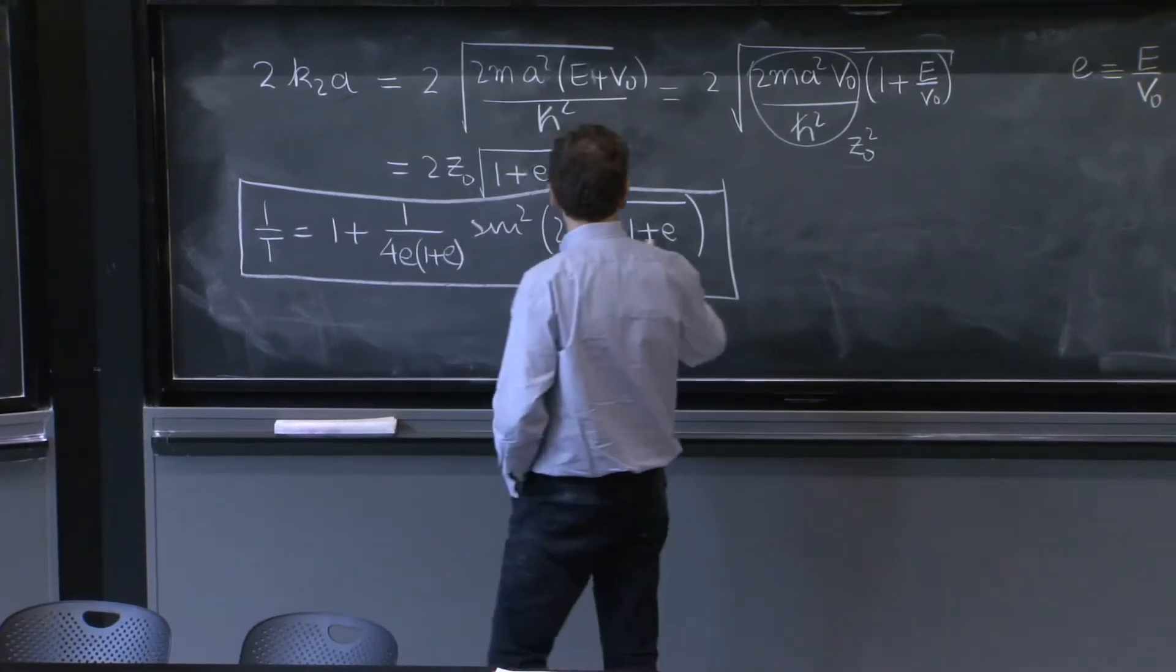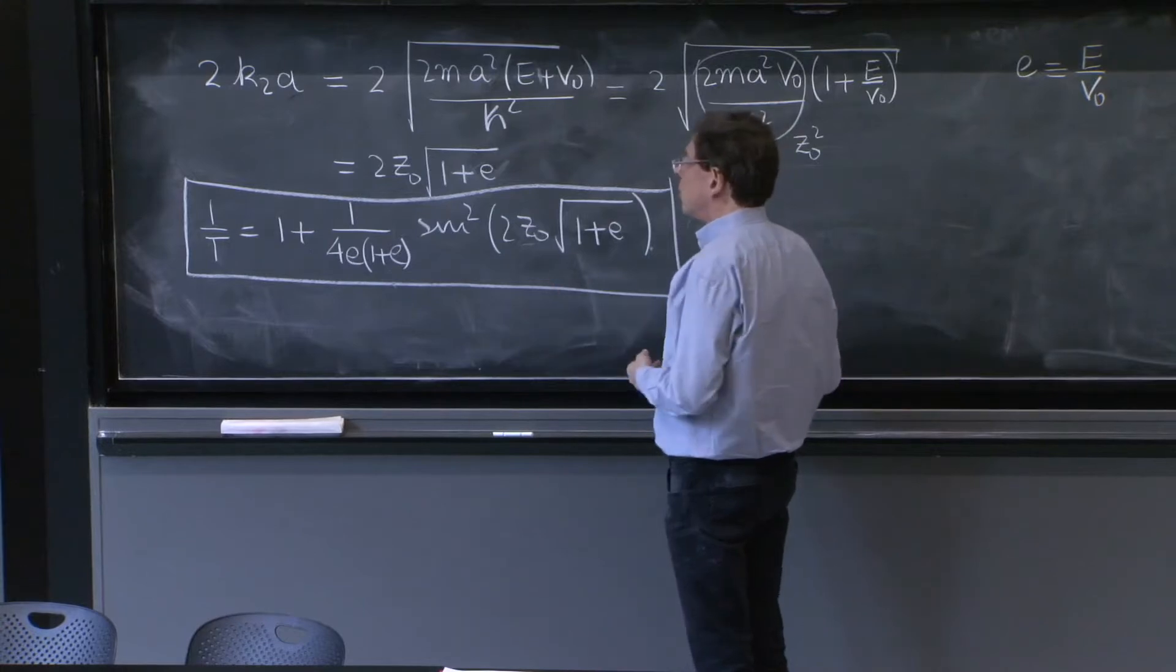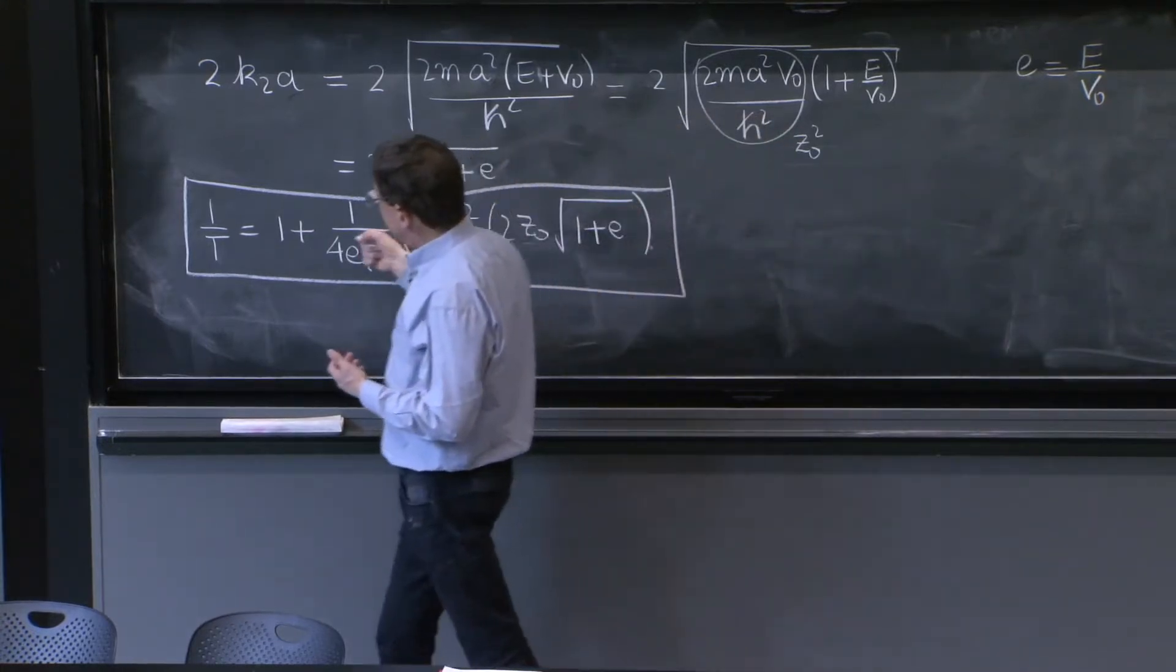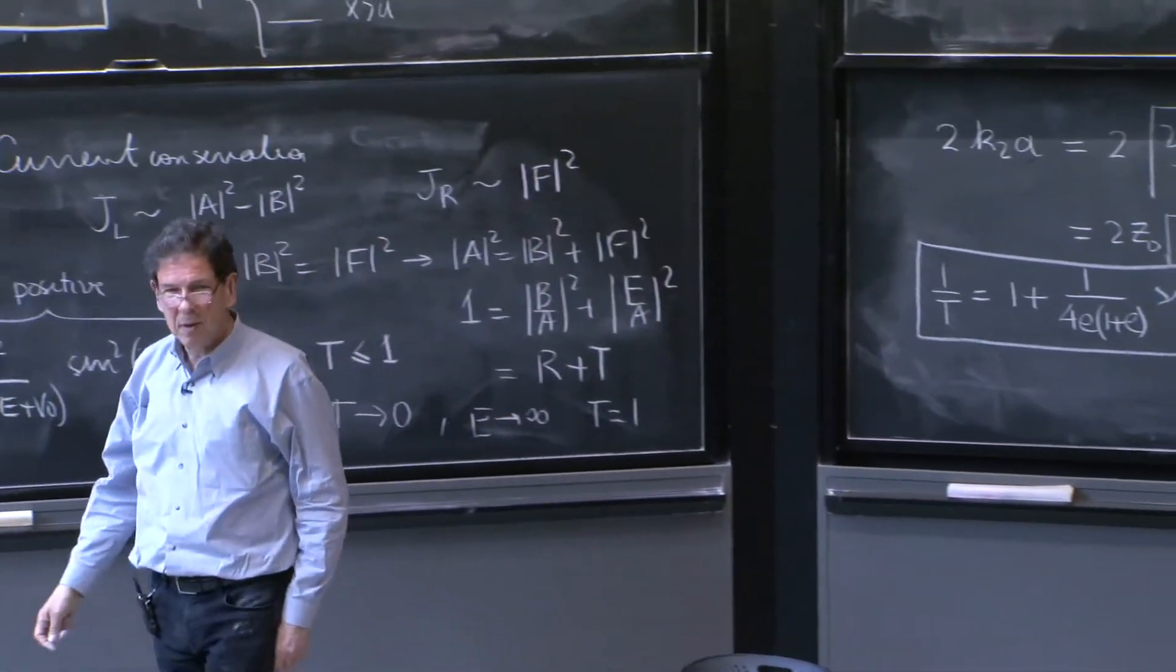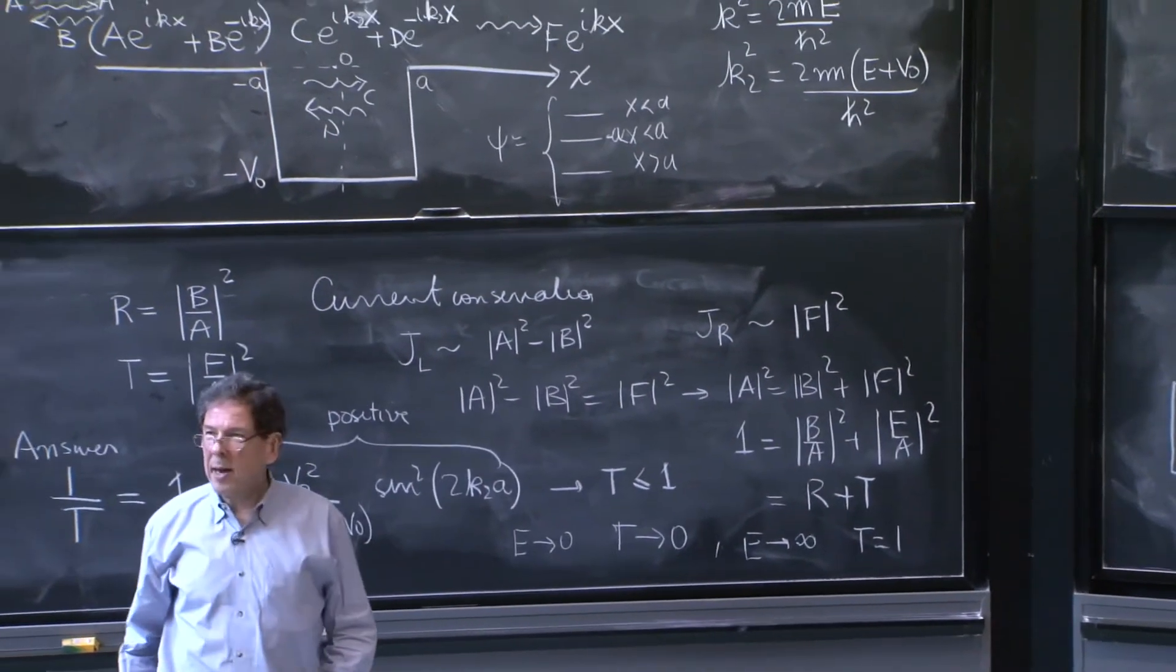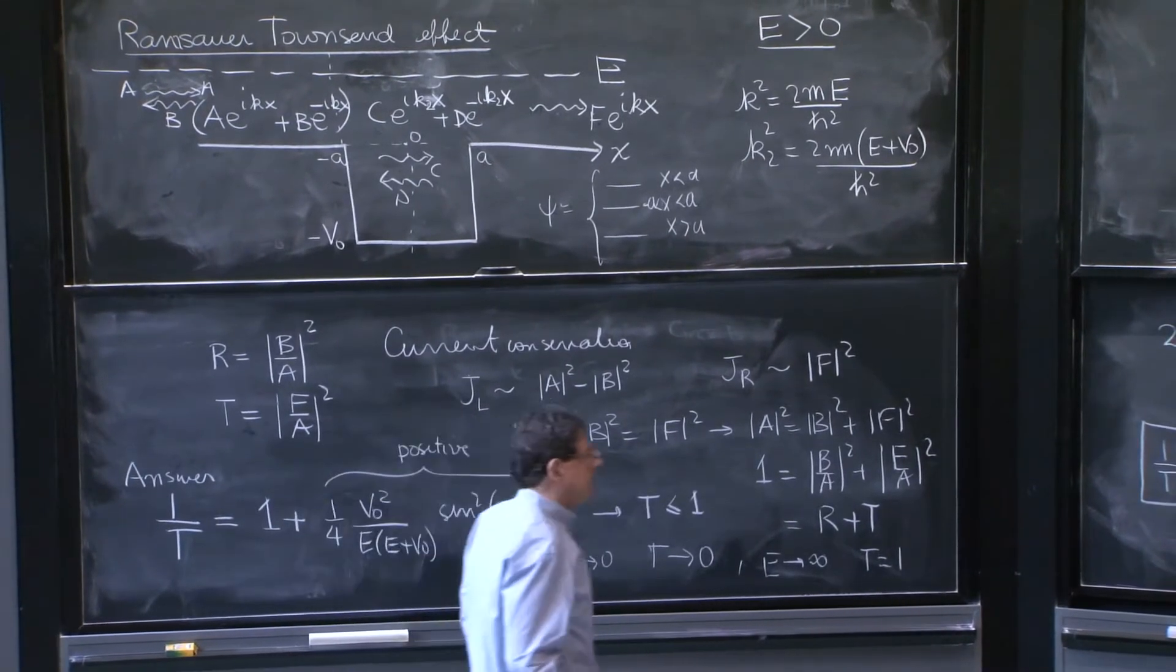But there is a possibility when t is equal to 1, and in particular, when this sine squared function is equal to 0, and that will make t equals to 1, then you have a perfect transmission.